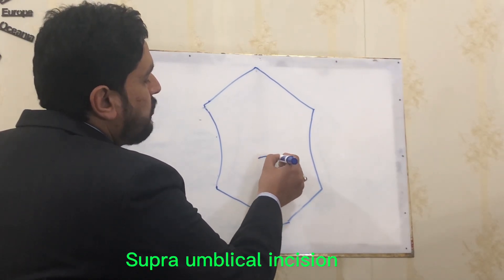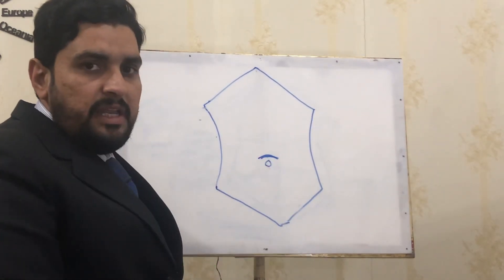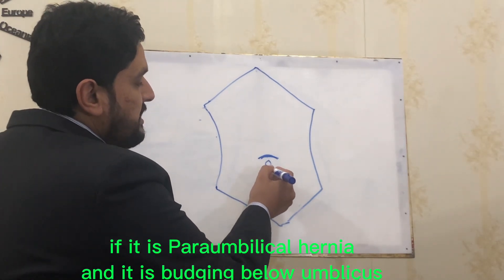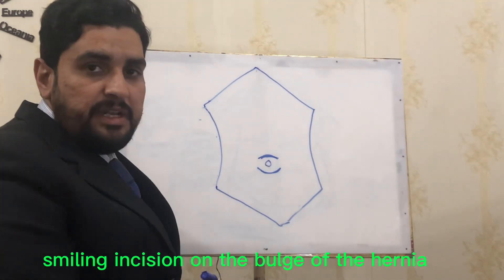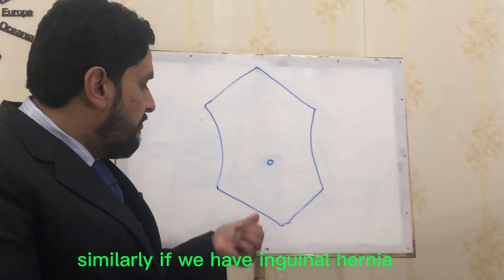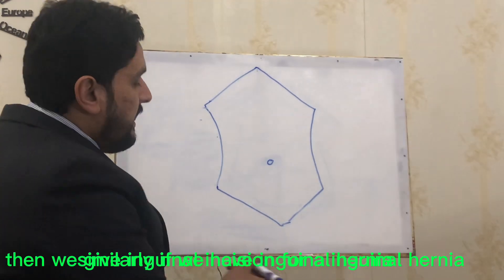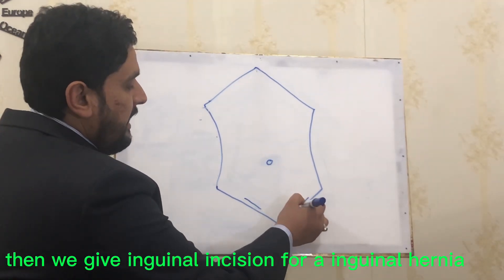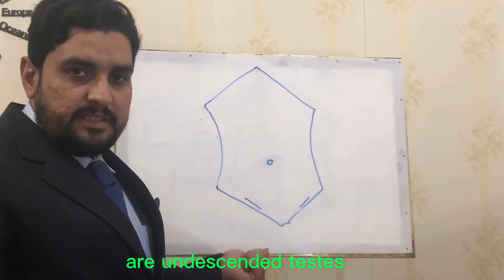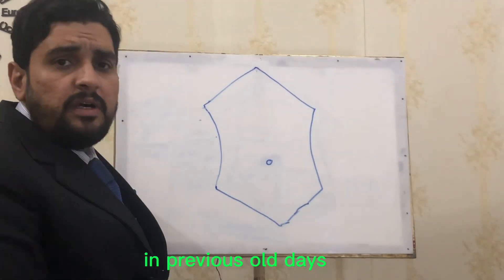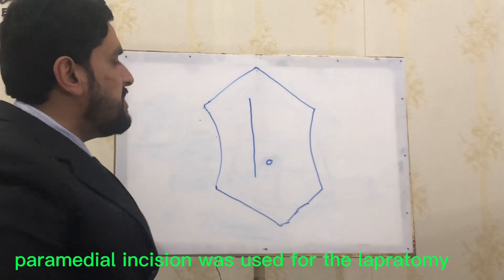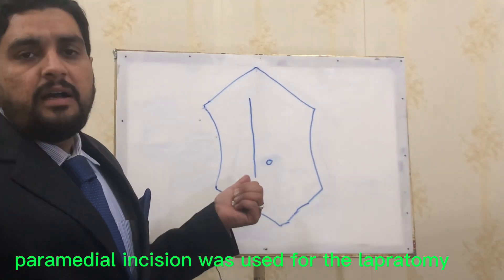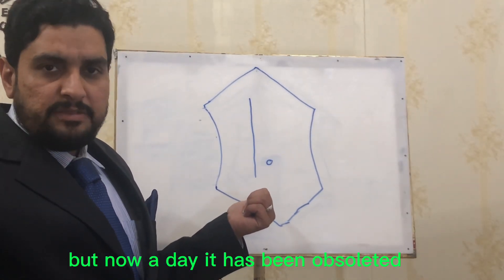We have some other special incisions that are disease dependent. For example, if we have a supra-umbilical hernia, we give a supra-umbilical incision. For a peri-umbilical hernia bulging below the umbilicus, we give an infra-umbilical smiling incision on the bulge of the hernia. For inguinal hernias or undescended testes, we give an inguinal incision. In previous old days there used to be a paramedian incision used for laparotomies, but nowadays it has been abandoned.